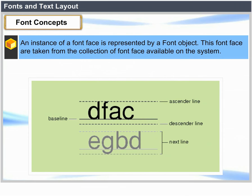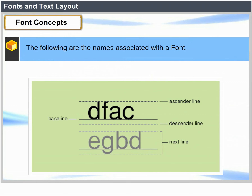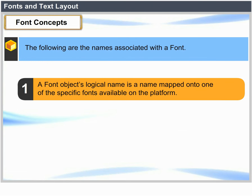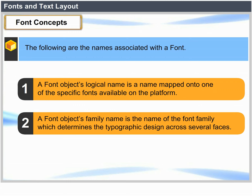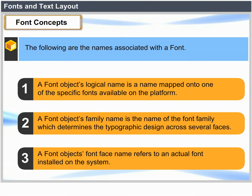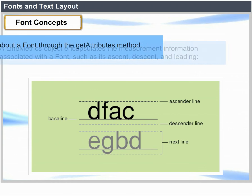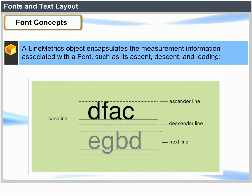Font Concept: An instance of a font face is represented by a Font object. Font faces are taken from the collection of font faces available on the system. The names associated with a font are: a font object's logical name, mapped onto one of the specific fonts available on the platform; a font object's family name, the name of the font family which determines the typographic design across several faces; and a font object's font face name, which refers to an actual font installed on the system. Access information about a font through the getAttributes method. A LineMetrics object encapsulates the measurement information associated with a font such as its ascent, descent and leading.